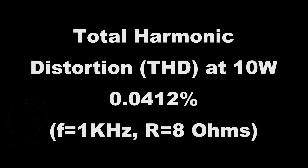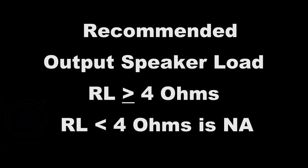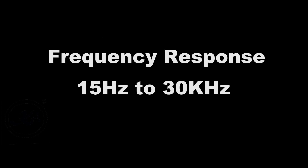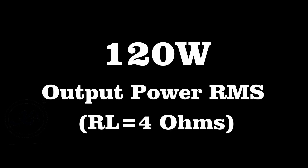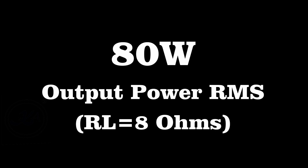Total harmonic distortion at 10 watts is 0.0412% at a frequency of 1 kilohertz with a load impedance of 8 ohms. The recommended output speaker impedance must be greater than or equal to 4 ohms; less than 4 ohms speaker impedance is not applicable. Frequency response is from 15 Hz to 30 kHz. Output power is 120 watts RMS into 4 ohms, and 80 watts RMS into 8 ohms, both with the recommended power supply.